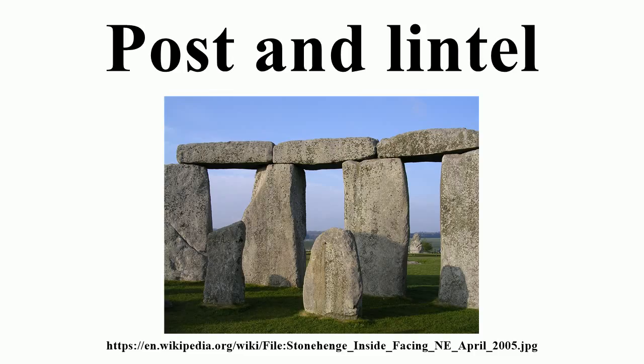A noteworthy example of a trabeated system is in Volubilis, from the Roman era, where one side of the decumanus maximus is lined with trabeated elements, while the opposite side of the roadway is designed in arched style. In India, the style was used originally for wooden construction, but later the technique was adopted for stone structures for decorated load-bearing and purely ornamented non-structural purposes.